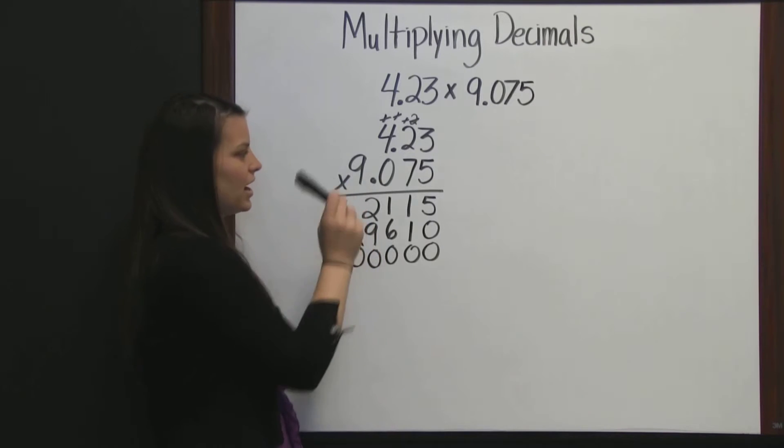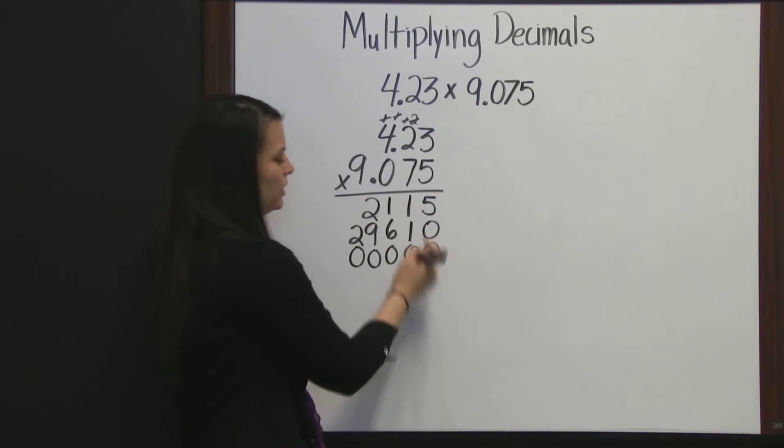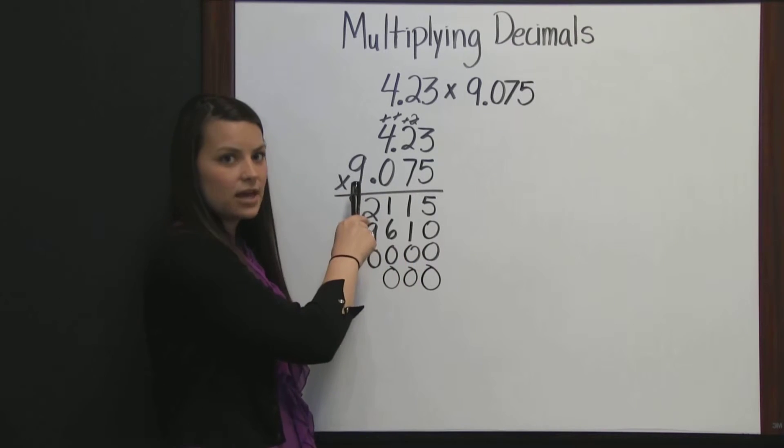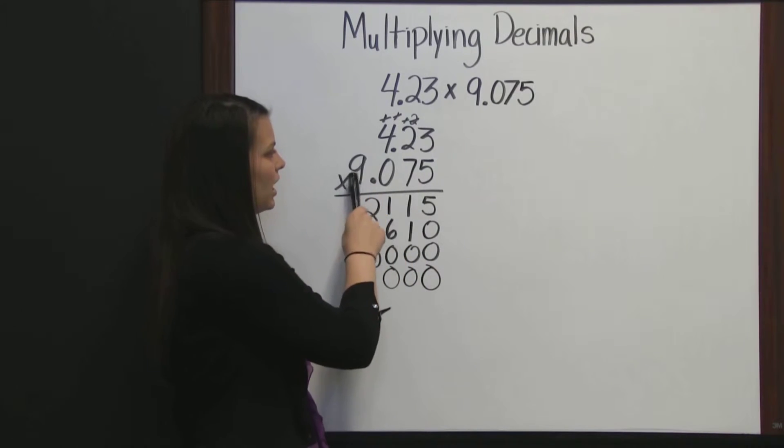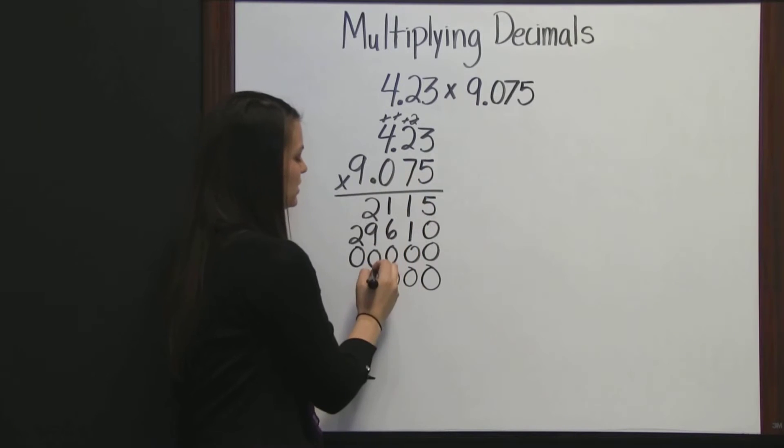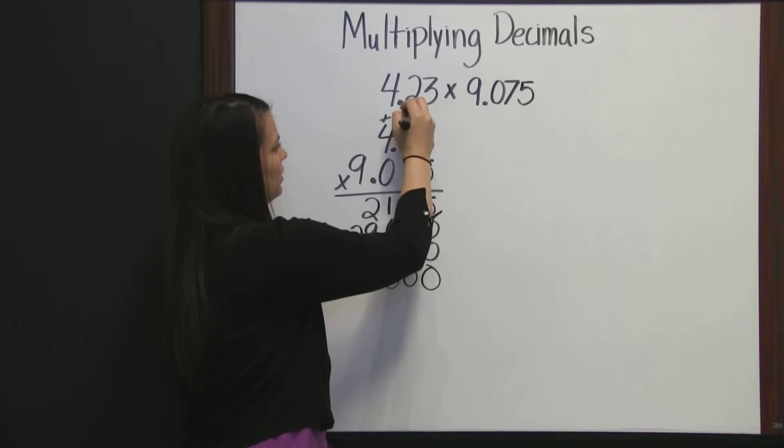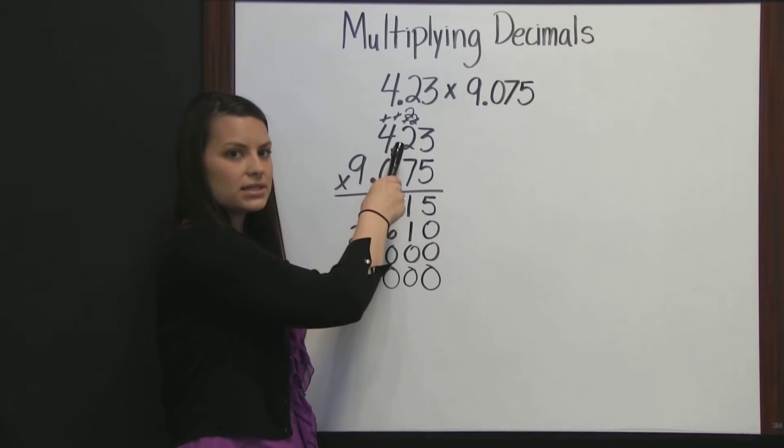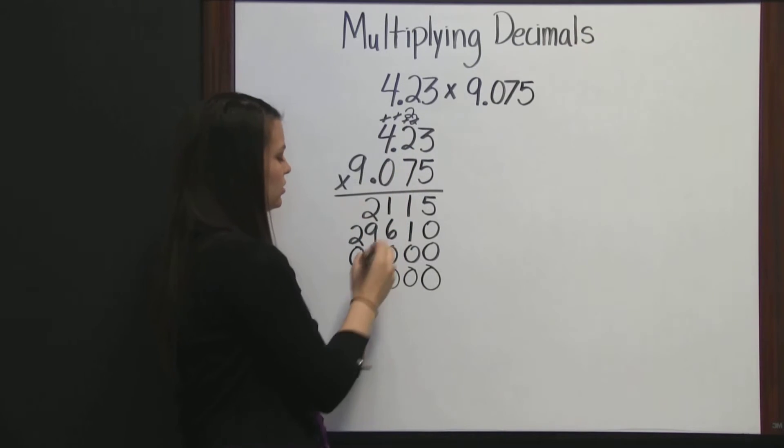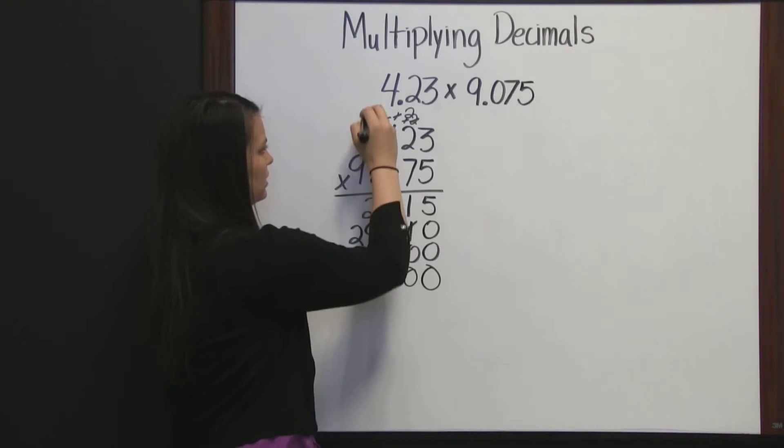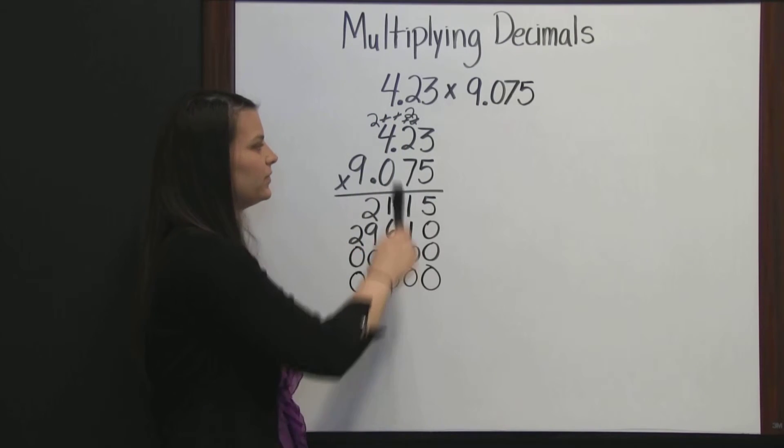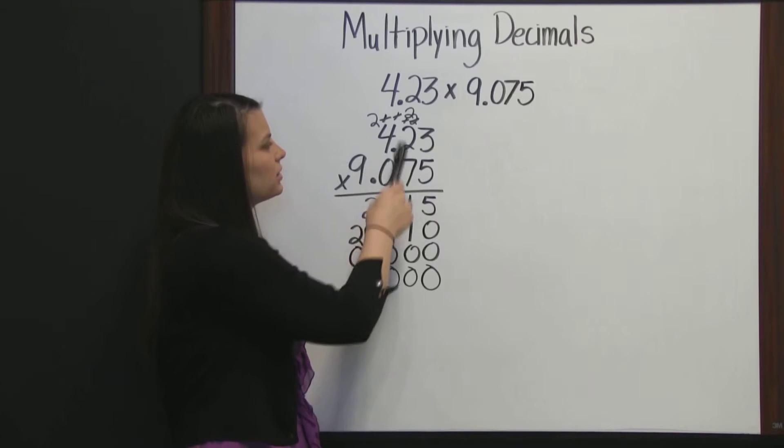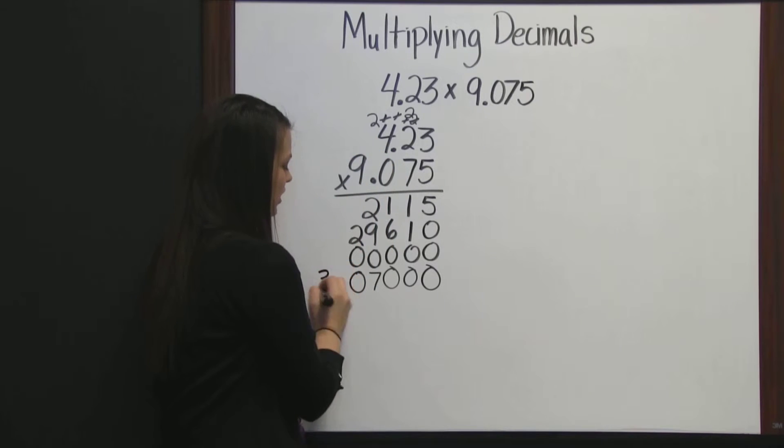Moving on to our last digit, now we need 3 zero placeholders before we multiply times 9. 9 times 3 is 27, write the 7, carry the 2. 9 times 2 is 18, plus 2 is 20, write the 0, carry the 2. 9 times 4 is 36, plus 2 is 38.